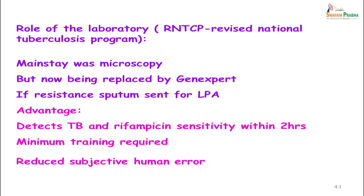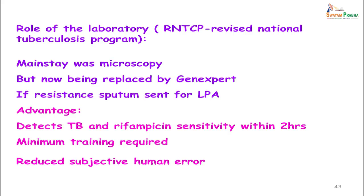Now with GeneXpert, which gives results within 2 hours, you can diagnose whether a patient has Mycobacterium tuberculosis and whether it is resistant to rifampicin. These patients are immediately started on second-line drug treatment, preventing them from spreading the infection to others. The resistant sputum is also sent for line probe assay (LPA) to detect the exact genes responsible for resistance. The advantage of GeneXpert is detection of TB and rifampicin sensitivity within 2 hours, with minimal training required and reduced subjective human error.